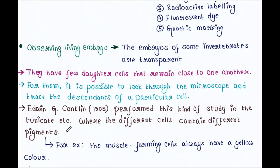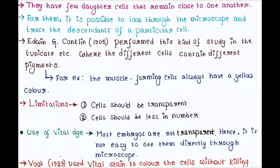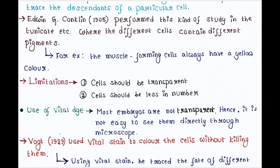For example, the muscle-forming cells always have a yellow color. Limitations of this technique: cells should be transparent, which is not always possible, and cells should be less in number.